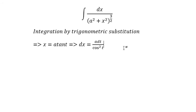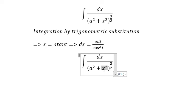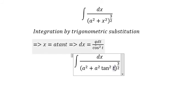Now we change x² to a² tan² t, so we get a² tan² t. And dx we change to a dt over cos² t.